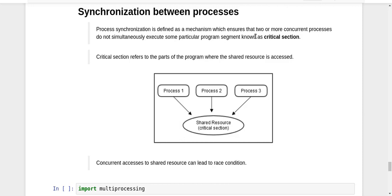Hey guys, this is Nikhil and welcome to yet another video of my series on parallel programming using Python. In this video we're going to see how we can ensure synchronization between processes. Process synchronization is defined as a mechanism which ensures that two or more concurrent processes do not simultaneously execute some particular program segment, which is known as the critical section.